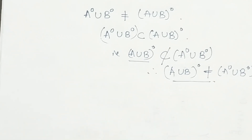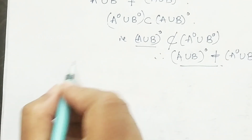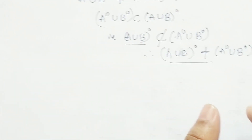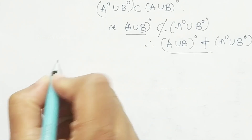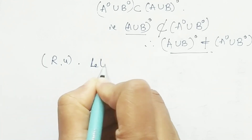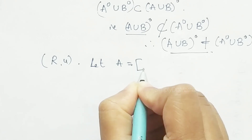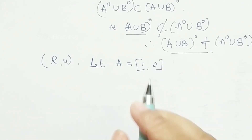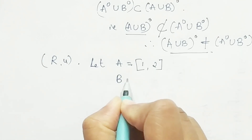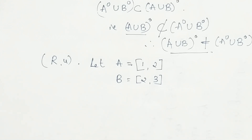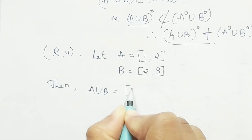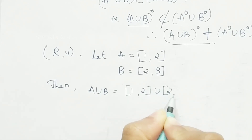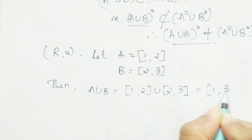Let us prove this with a contradictory example. Consider the real space R. Let A be the subset closed interval [1, 2] and B be the subset closed interval [2, 3] of the real space R. Then A ∪ B equals [1, 2] ∪ [2, 3], which equals the closed interval [1, 3].